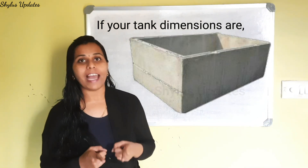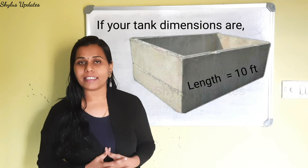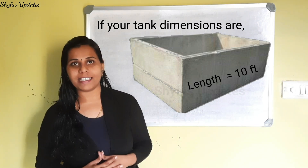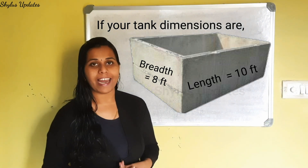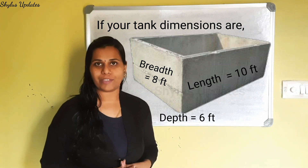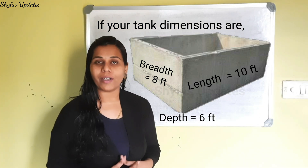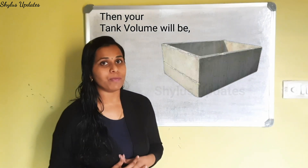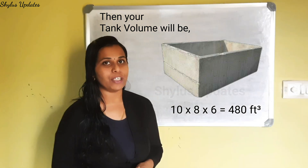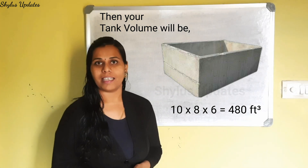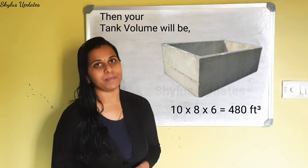If your tank dimensions are: length is equal to 10 feet, breadth is equal to 8 feet, and depth is equal to 6 feet, then your tank volume will be 10 into 8 into 6, which is equal to 480 feet cube.